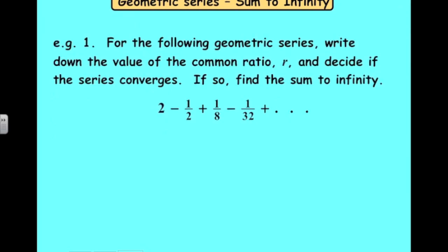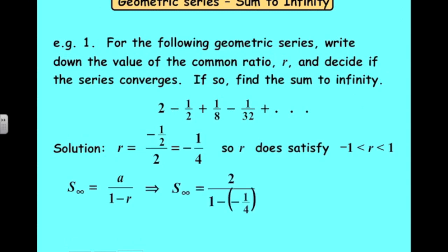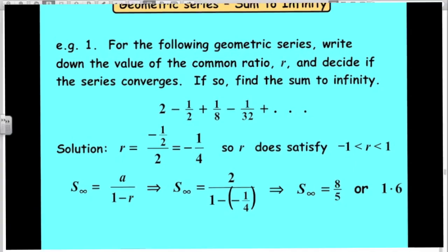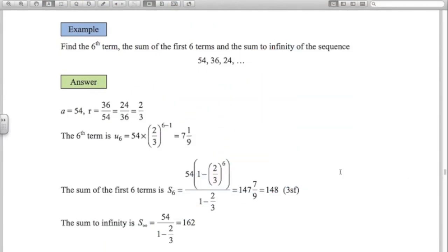In this example, a equals two. To find r, we note the terms are changing sign, so r must be negative. We divide any term by the previous term: negative one half divided by two gives negative one quarter. So r equals negative one quarter, and the sum to infinity, a over (1 minus r), is 1.6.